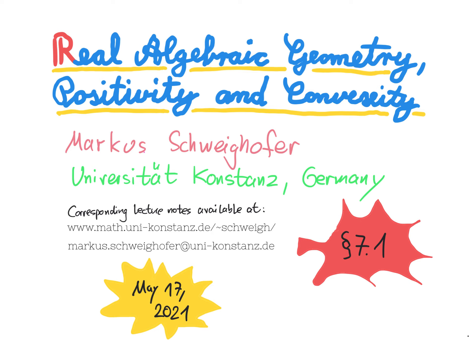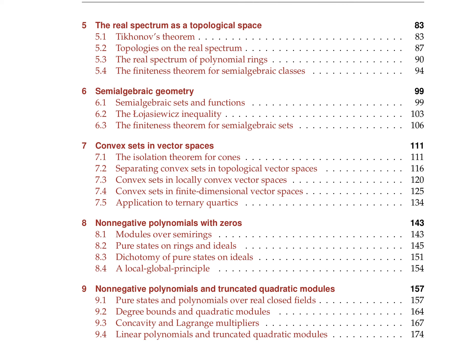Welcome to today's lecture. We start a new chapter in our lecture notes, namely chapter 7 about convex sets in vector spaces. Today we will treat section 7.1 about the isolation theorem for cones. This new chapter is about things that are not typical for real algebraic geometry but which we will need as a tool; it belongs more or less to the area of functional analysis.